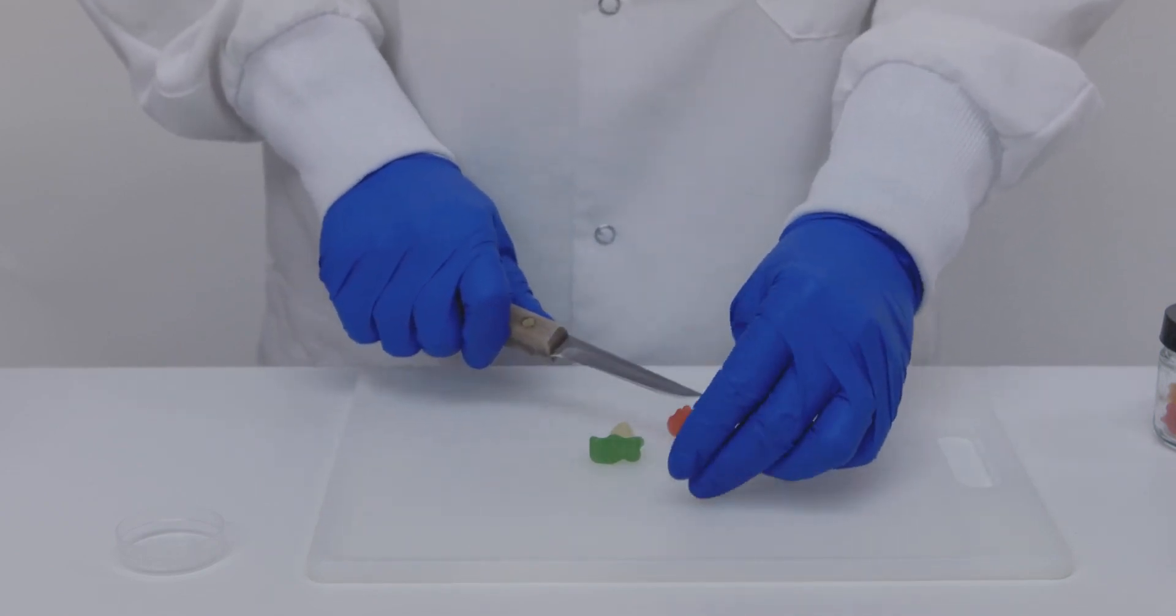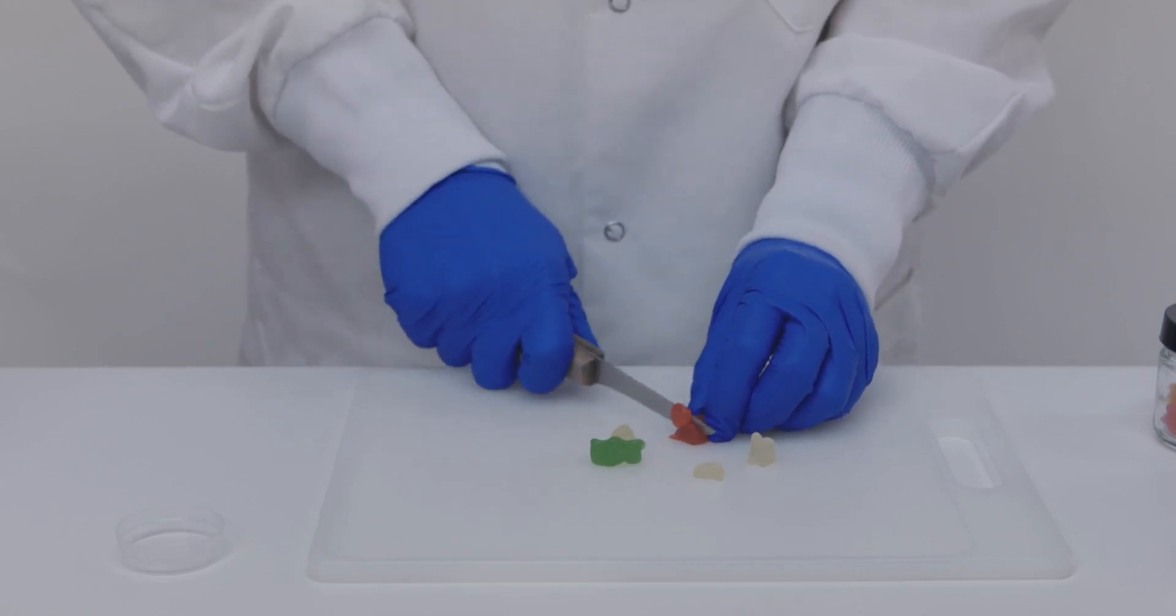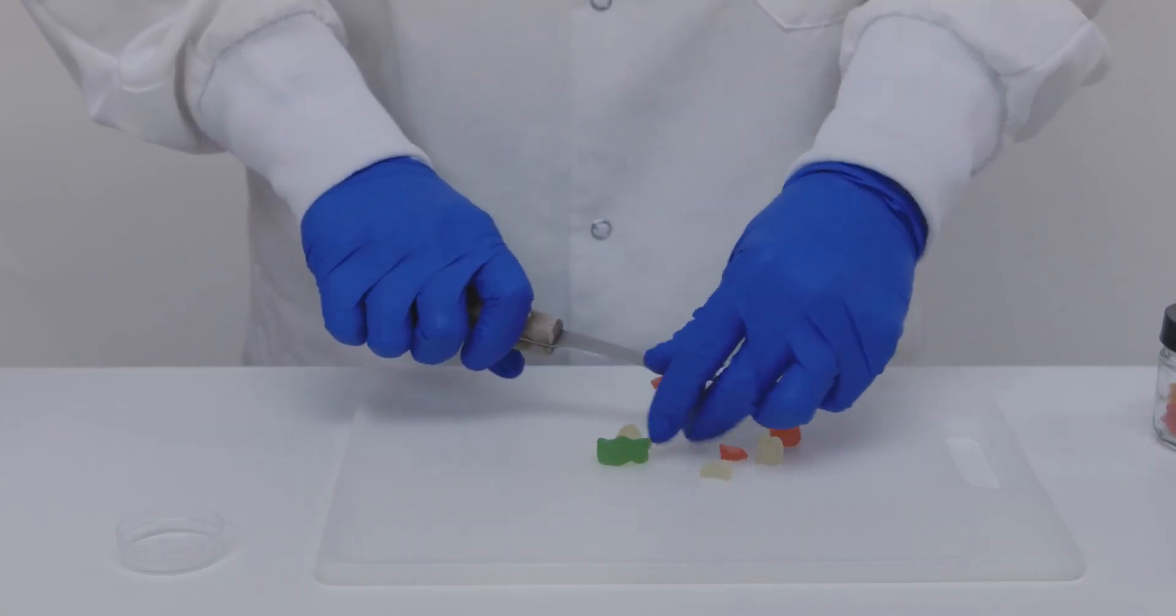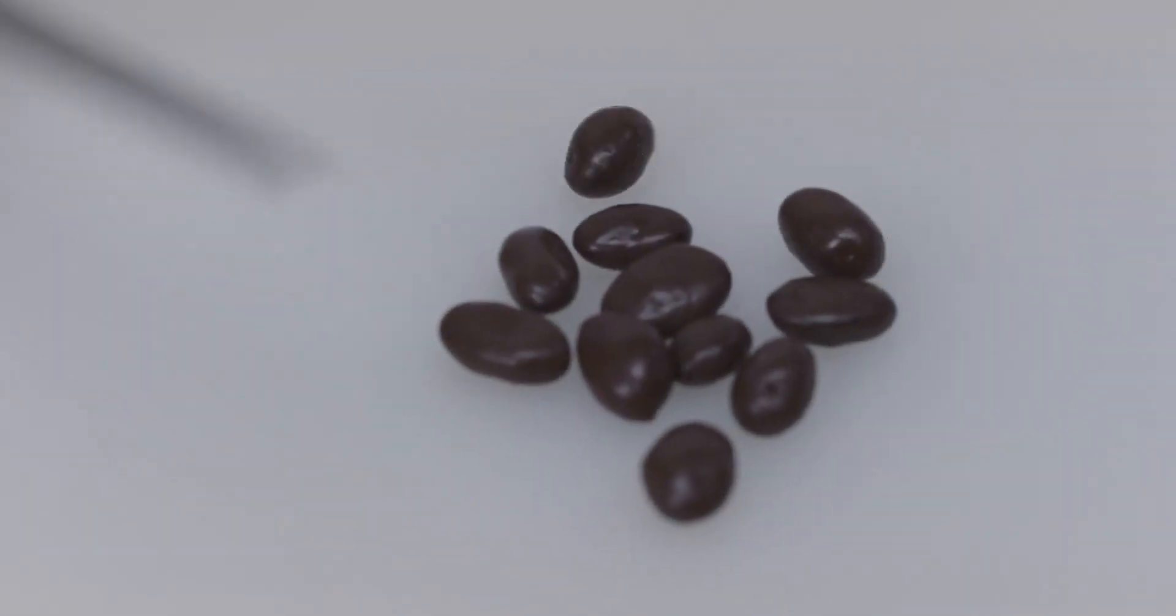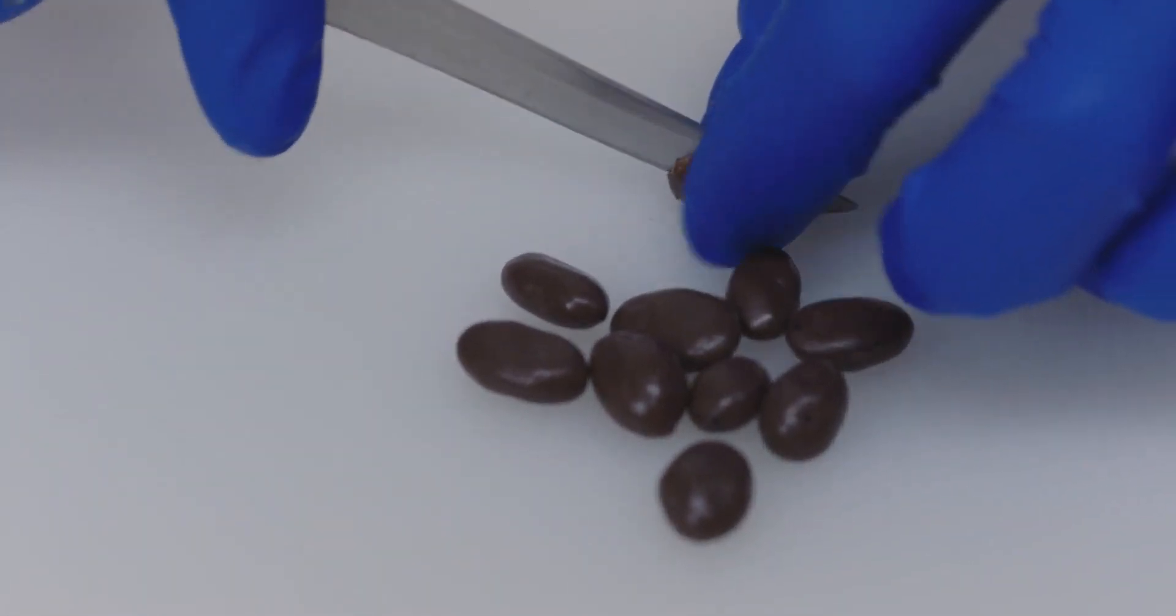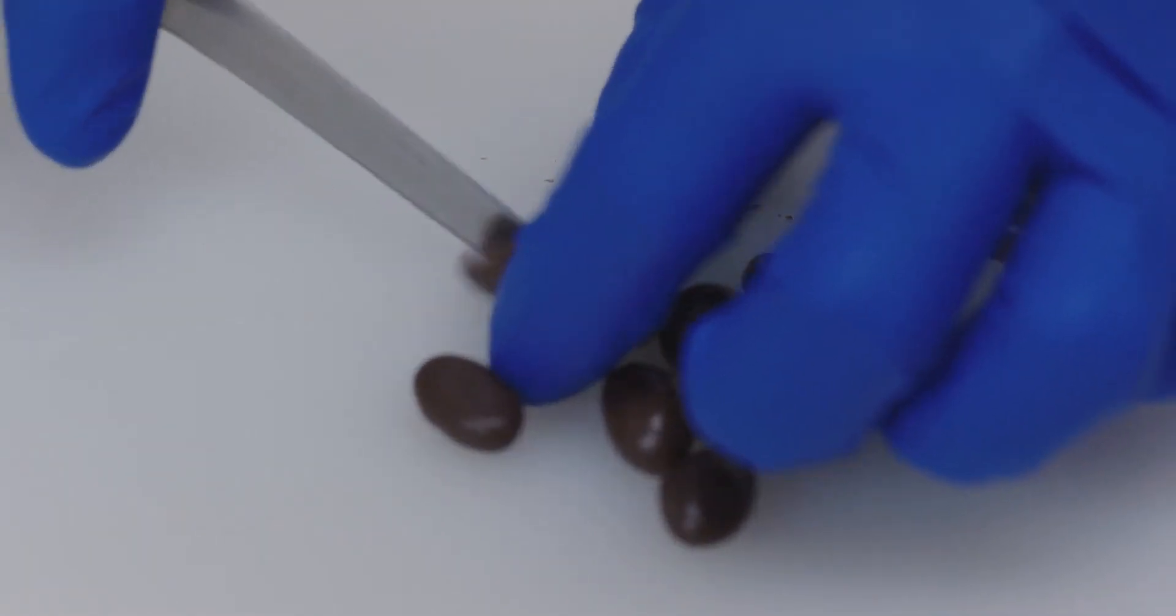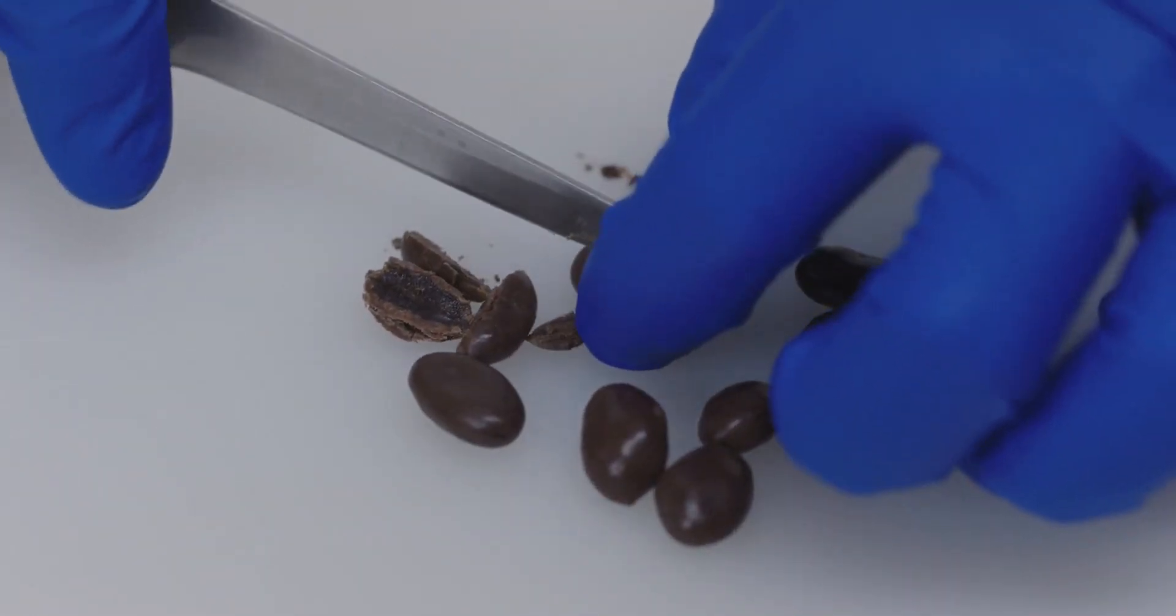First, the friction of the grinding process heats the sample, driving off moisture and changing its water activity. Second, the increased surface area means that the product loses or gains moisture more quickly, making it more susceptible to the effects of room humidity.